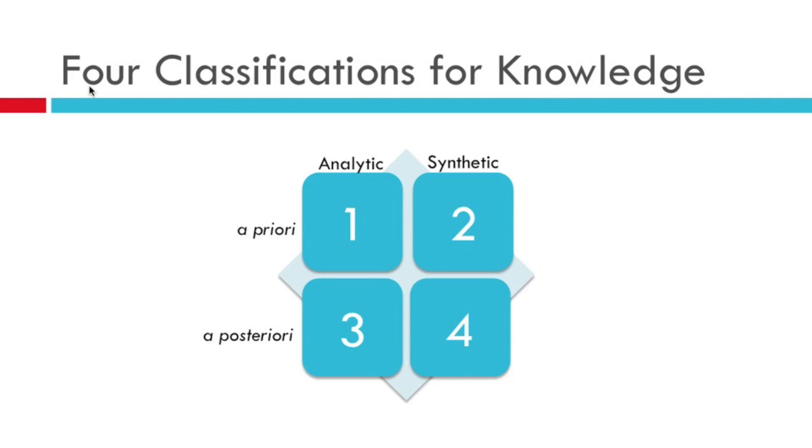This gives us four possible classifications for knowledge. We can have analytic a priori knowledge, which is number one. We can have synthetic a priori knowledge, which is number two. We can have analytic a posteriori knowledge, which is number three. Or we can have synthetic a posteriori knowledge, which is number four here.